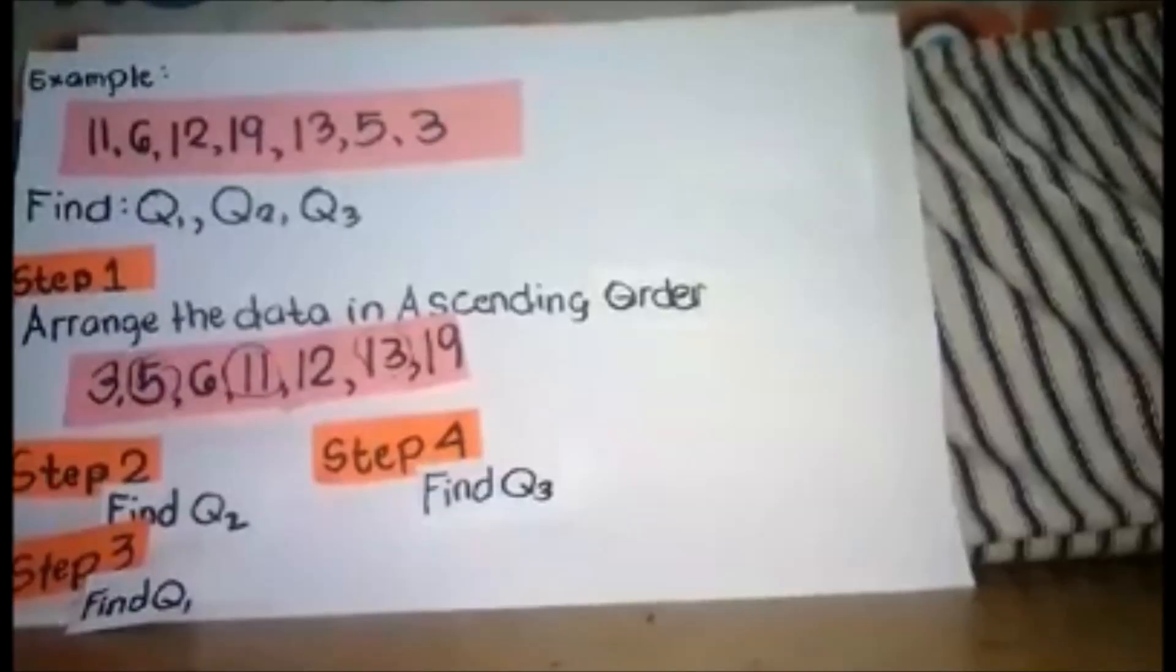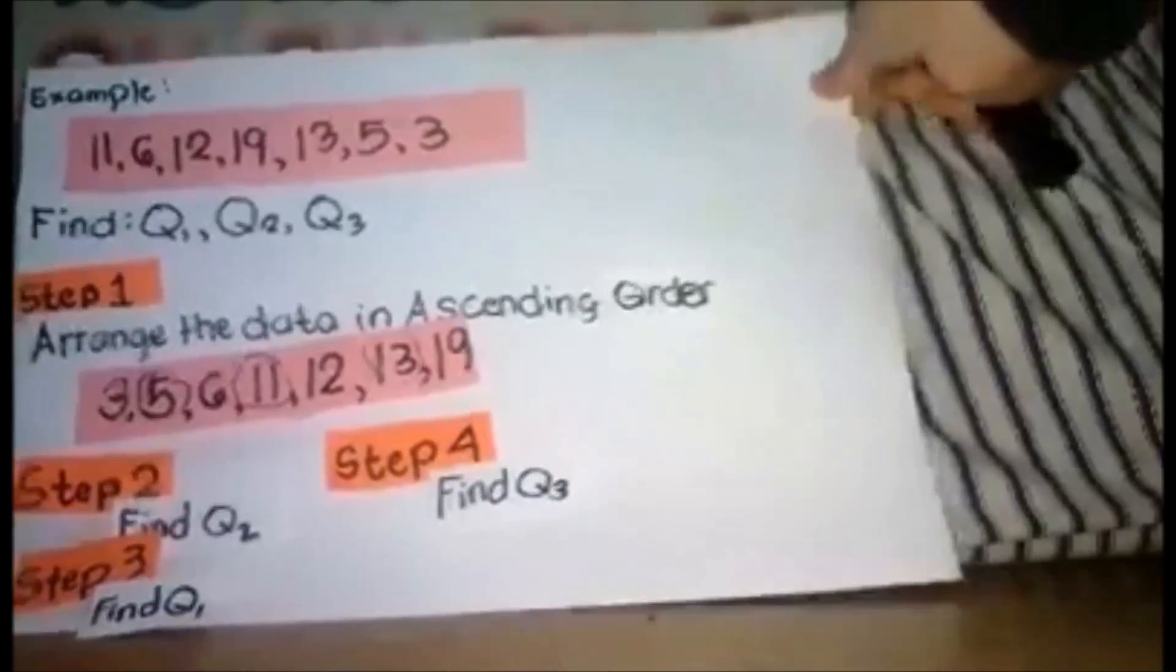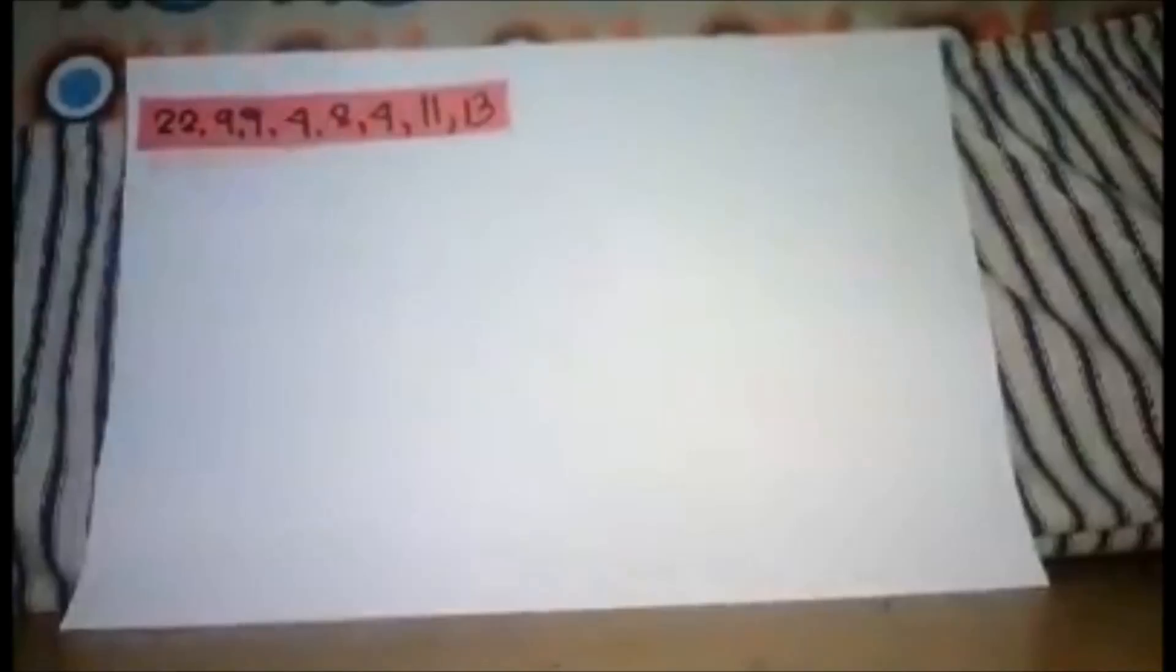Very good question. When the total number of data is an even number, it is more complicated. When you say even number, it is divisible by 2, like 2, 4, 6, 8, 10, and so on. As I mentioned earlier, step 1 is to arrange the data in ascending order.